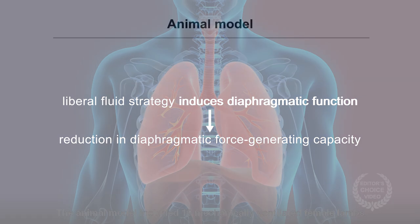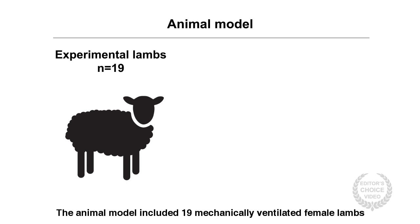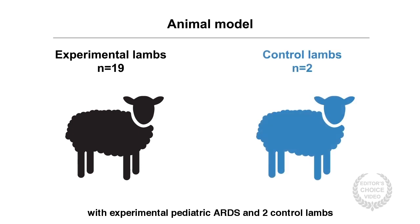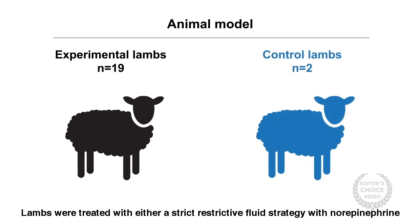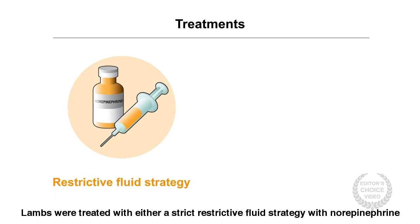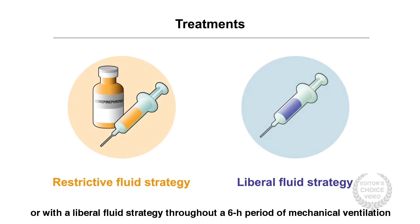The animal model included 19 mechanically ventilated female lambs with experimental paediatric ARDS and two control lambs. Lambs were treated with either a strict restrictive fluid strategy with norepinephrine or with a liberal fluid strategy throughout a six-hour period of mechanical ventilation.